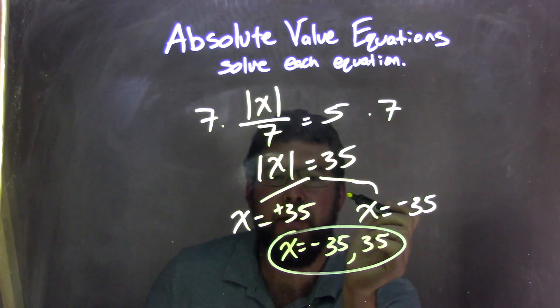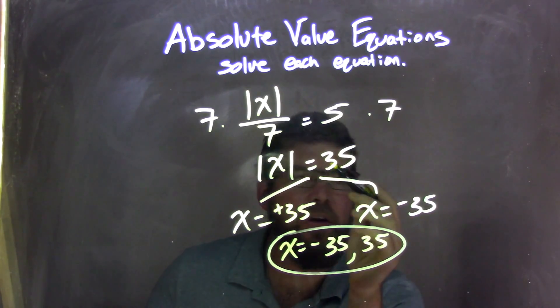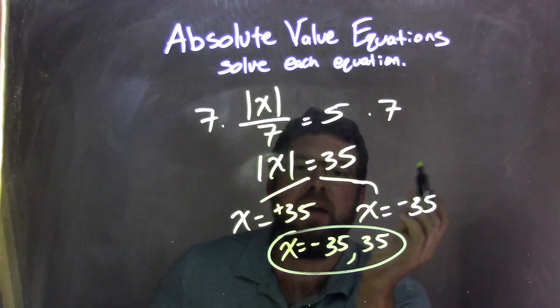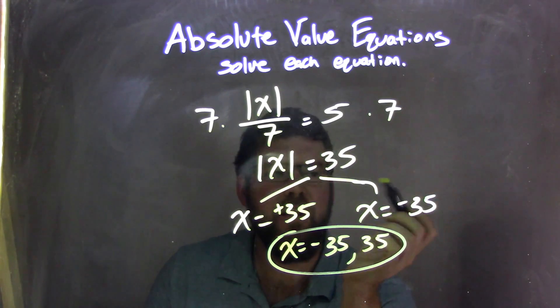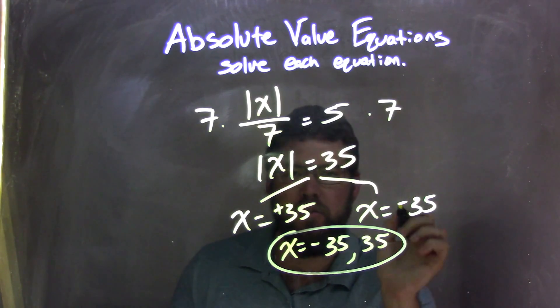From there, I can break it apart now into two equations. x right here, x right there, positive 35, negative 35. And so now our final answer, writing nice and neat, is x equals negative 35 and positive 35.